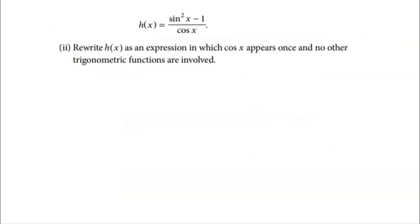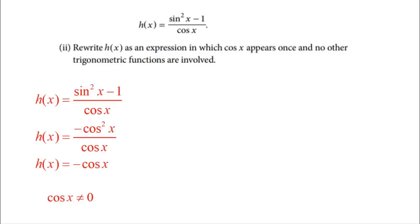For the second part of Part A, they want me to rewrite H of X as a single cosine with no other trigonometric functions involved. This one is actually quite easy — just two steps. The numerator, sine squared minus one, can be rewritten as negative cosine squared using the Pythagorean identity. Then cosine squared over cosine reduces to a single cosine, giving a final answer of negative cosine of X.